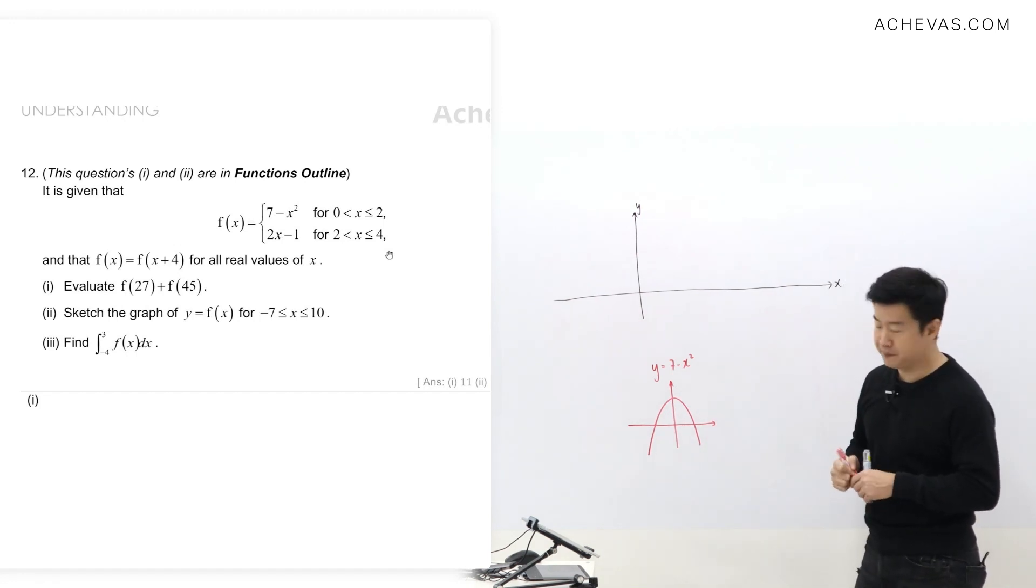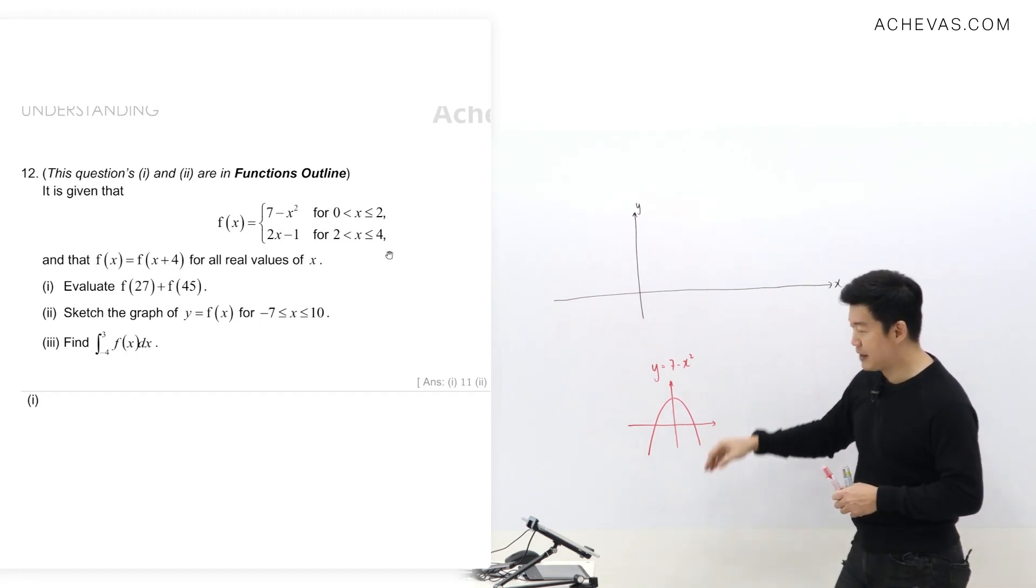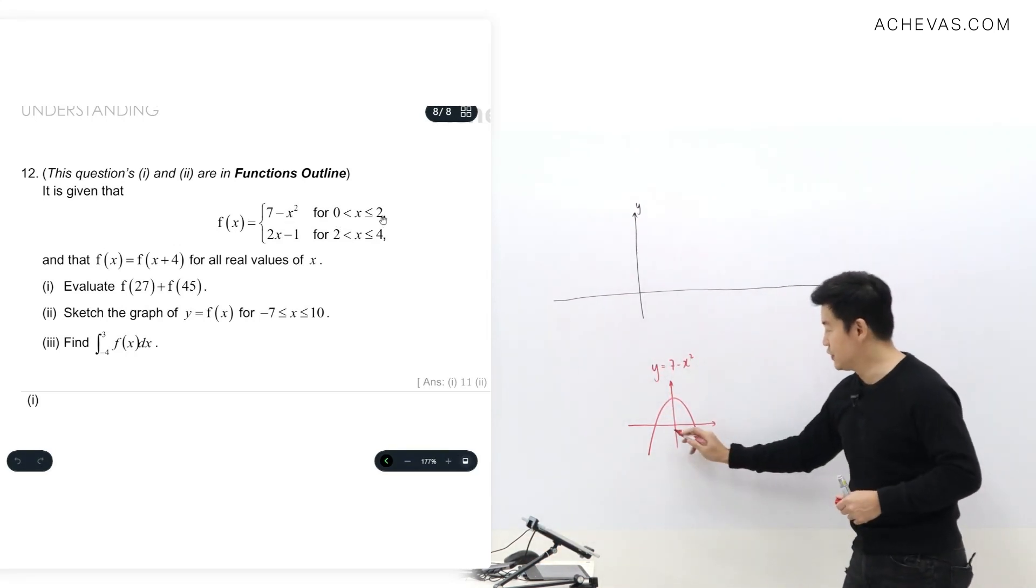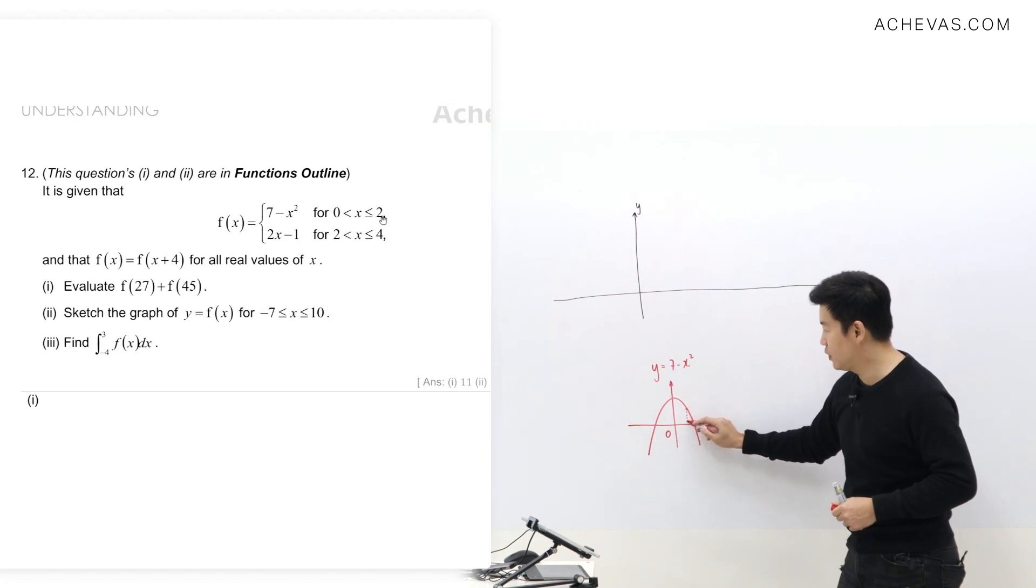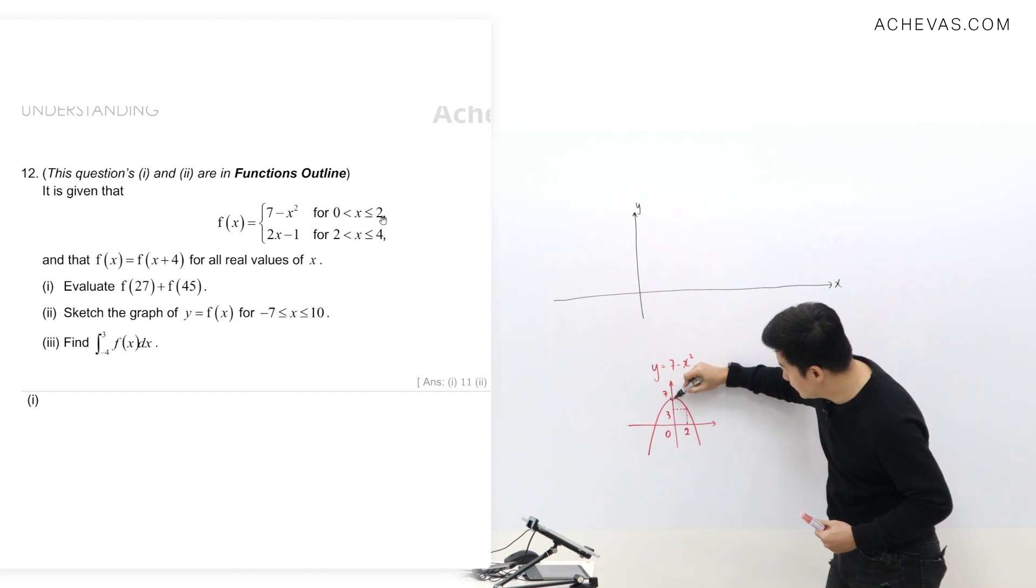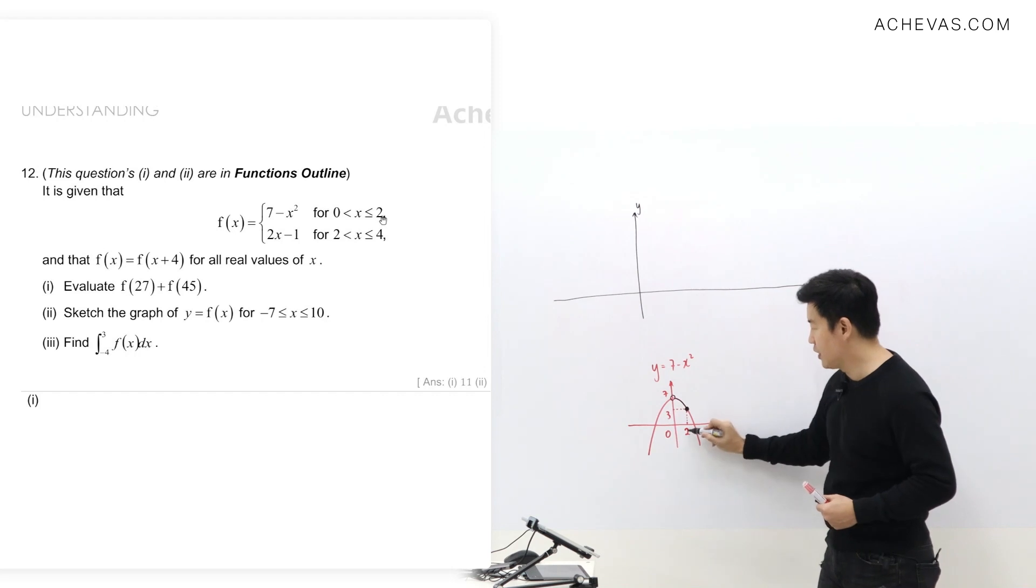It is a parabola, so for seven minus x squared, I need to chop it off from zero to two. When x equals zero, y is seven. When x equals two, seven minus four gives us three. So I'm going to be drawing from here all the way to this point with a solid dot. This point here is at (2,3) and this point is at (0,7).